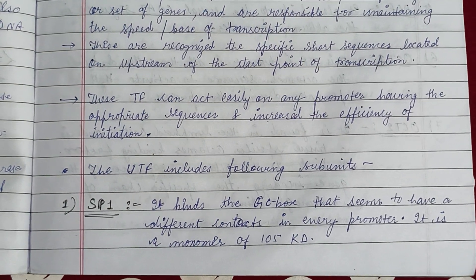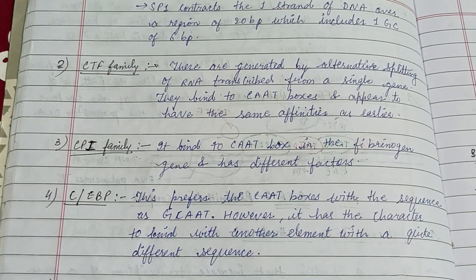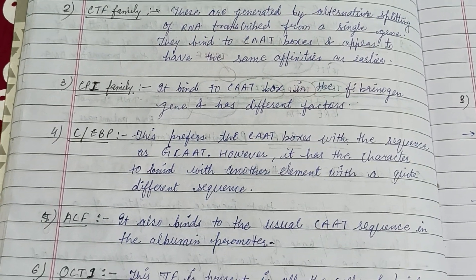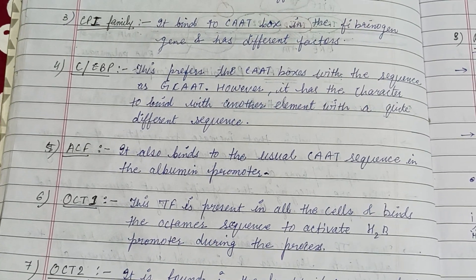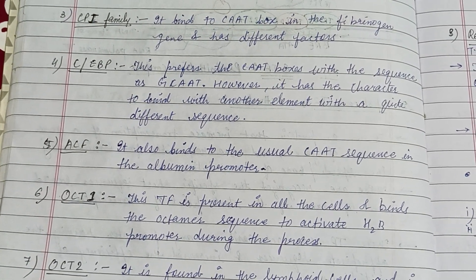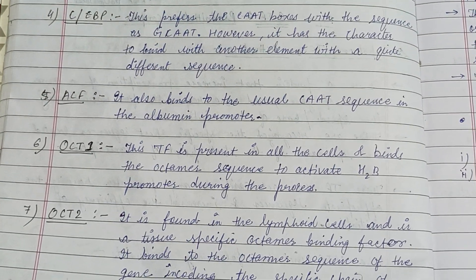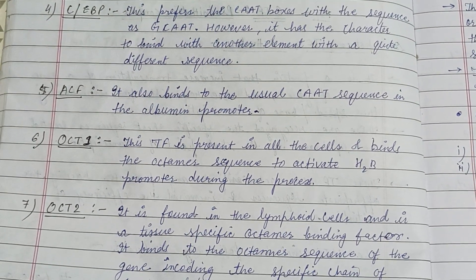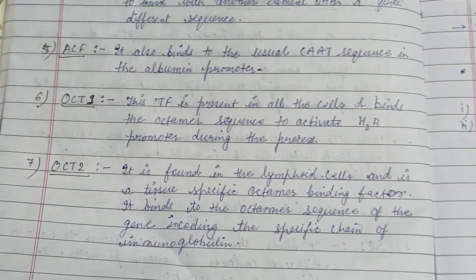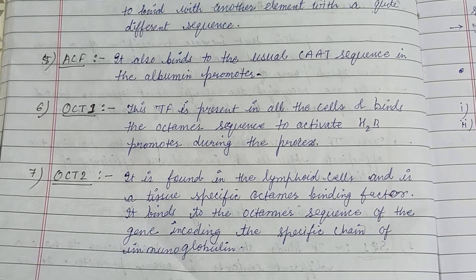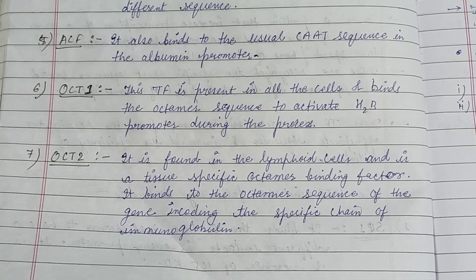Upstream transcription factors are subdivided into subunits like SP1, the CTF family, the CPI family which binds to the CAAT box in the fibrinogen gene, C/EBP which binds to the CAAT box with the sequence GCAAT, ACF which also binds to the usual CAAT sequence in the albumin promoter, and OCT1 and OCT2 which are found in lymphoid cells and are tissue-specific octamer-binding factors.